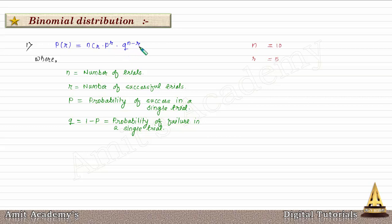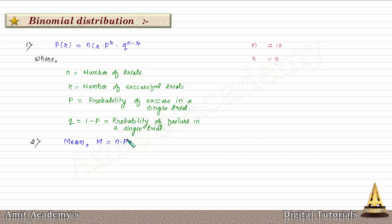The mean of the binomial distribution is given by M = n × P, where n is the total number of trials and P is the probability of success in a single trial. The standard deviation is given by the square root of nPQ.